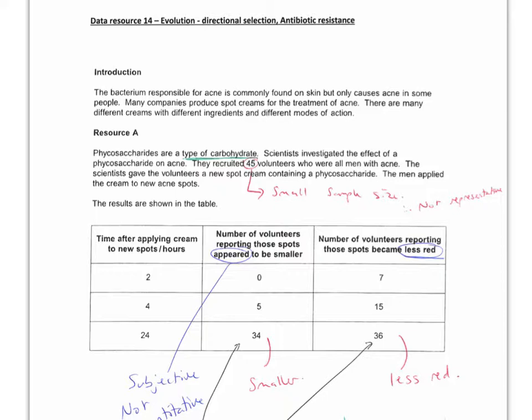Other things to spot as we're reading through, 45 volunteers. In one of the questions, it wants you to say that's a small sample size, so it's not representative. It's always a bit of a blur between what is a small and what is a large sample size. In some questions before where this was counted as a large sample size, this sort of number.